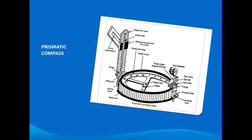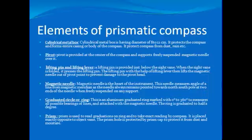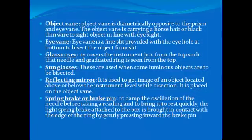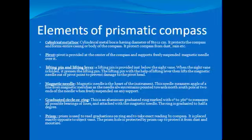As shown in the figure, the detailed diagram of prismatic compass shows the different elements: compass box or cylindrical metal box, pivot, magnetic needle, graduated ring, agitated cap, glass cover, prism, prism cap, sighting slit, colored glasses, focusing screw, object vane, horse hair, reflecting mirror, brake pin, supreme brake, lifting pin, and lifting lever.